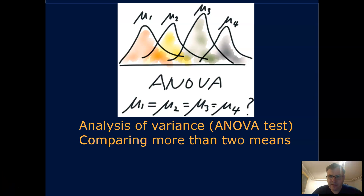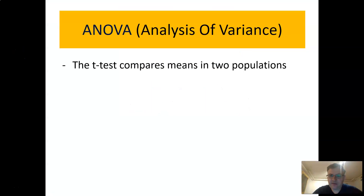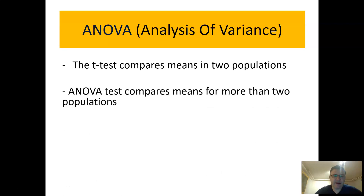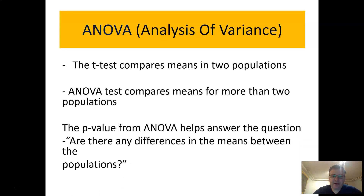This is a video about the ANOVA test. I will go through some intuition behind ANOVA and show you how to do it with Stata software. A simple t-test compares two means to check for a significant difference, but when you have more than two populations — three, four, five means — you must apply the ANOVA test, which does a simultaneous test for differences between more than two populations. You get a test statistic and p-value to evaluate whether there are any differences in the means between the populations.